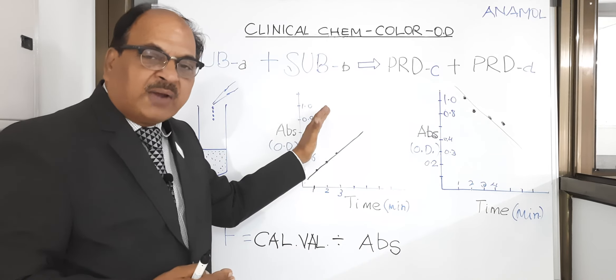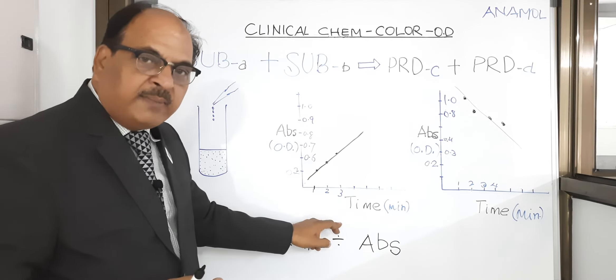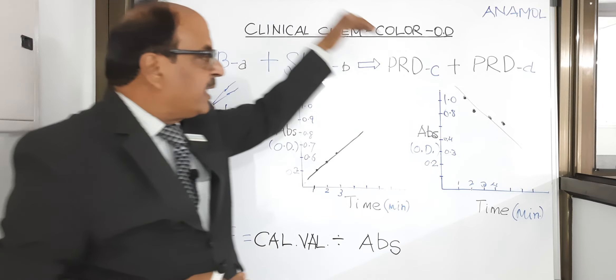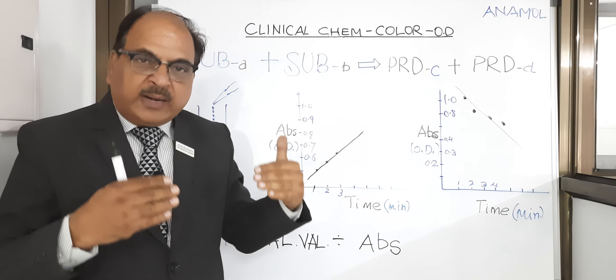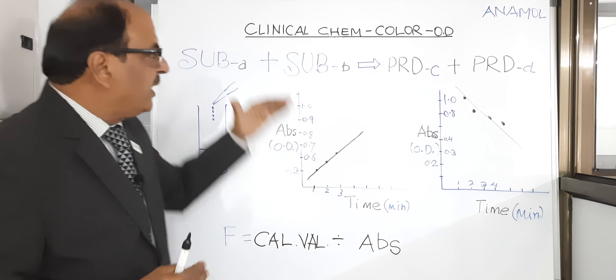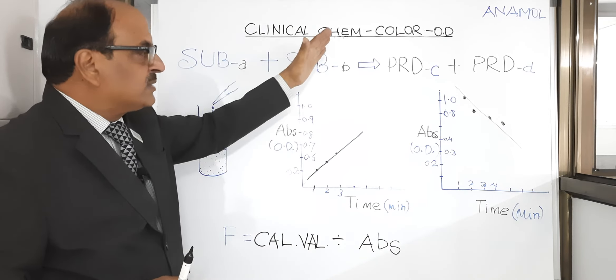And that is what is reflected in the instrument's screen as a graphical form which is absorbance versus time. At first minute what was the OD, second minute, third minute, hence increasing or decreasing depending upon the principle. I hope I have been able to explain these three fundamental components of clinical chemistry.